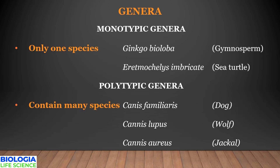Polytypic genera contain many species. For example, the genus Canis has many species: Canis familiaris (dog), Canis lupus (wolf), and Canis aureus (jackal).